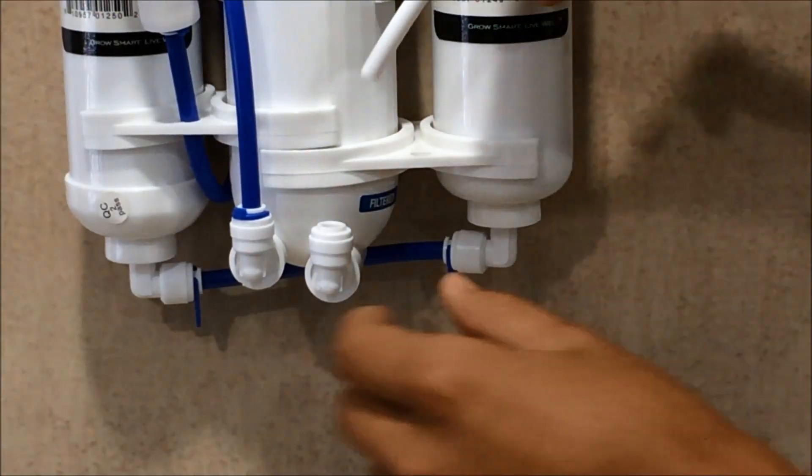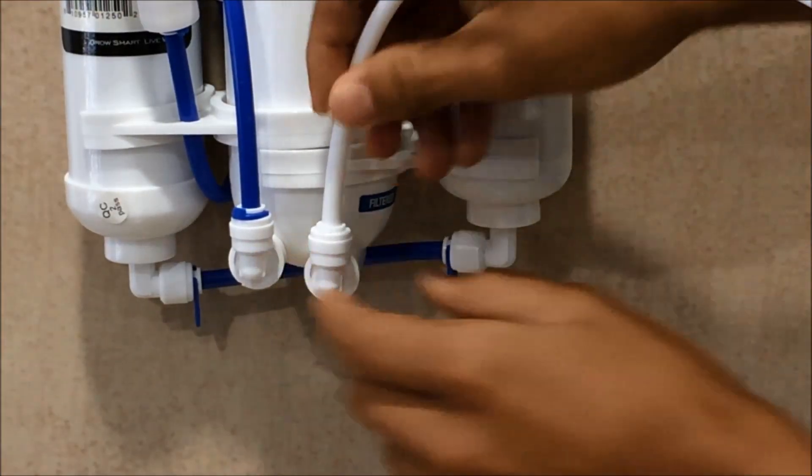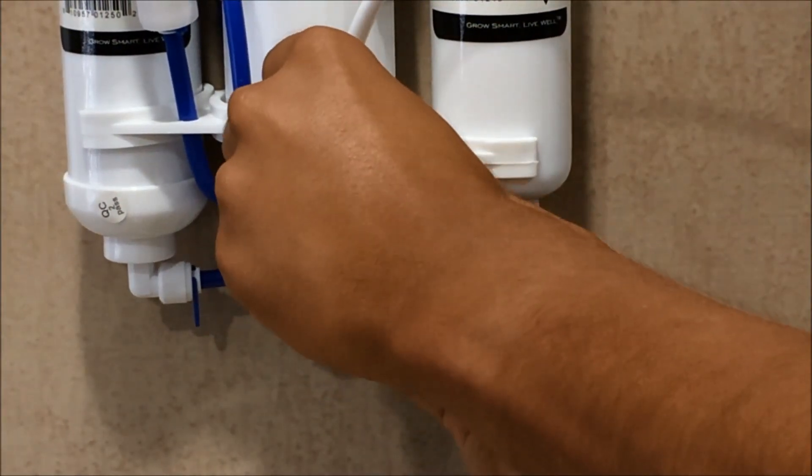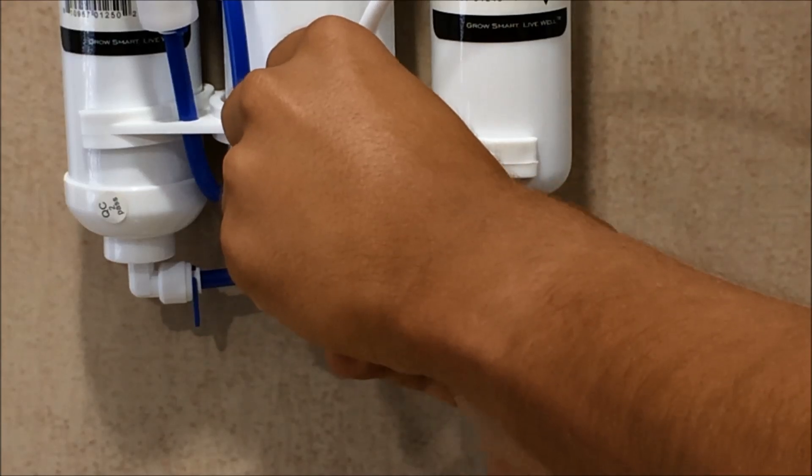The next thing you'll do is insert tubing into the filtered side here, and it's labeled filtered, and then you'll replace the blue clip and cut your tubing at the desired length.